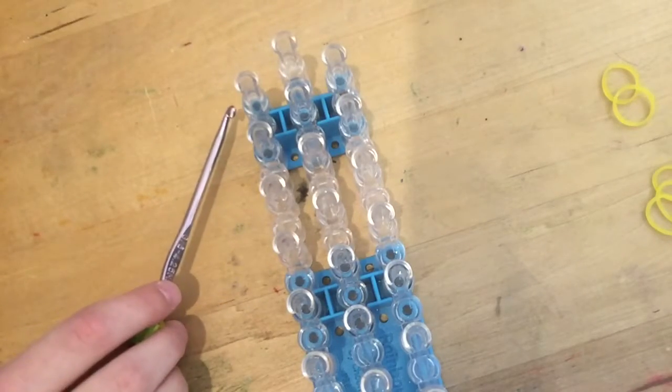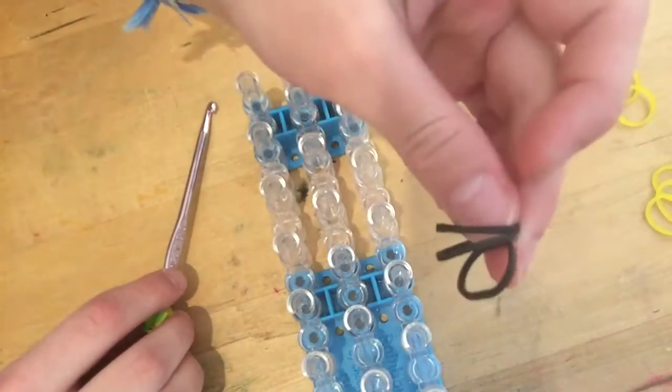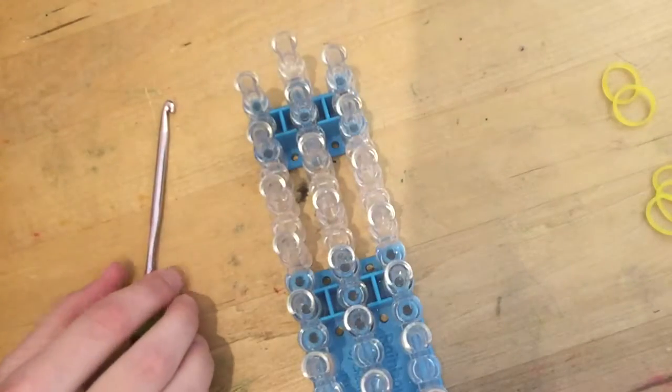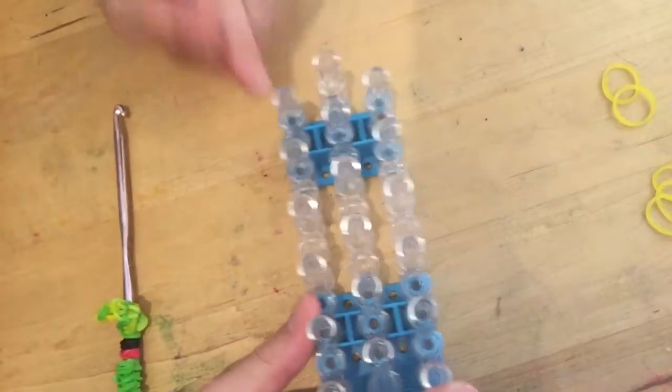So you only need your hook. I'm going to make a Halloween bracelet even though it's not Halloween, so I'm going to use black and orange, and you're going to need your loom in an offset configuration like this.